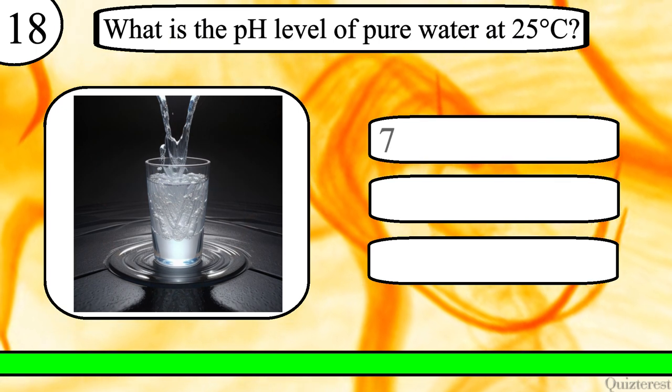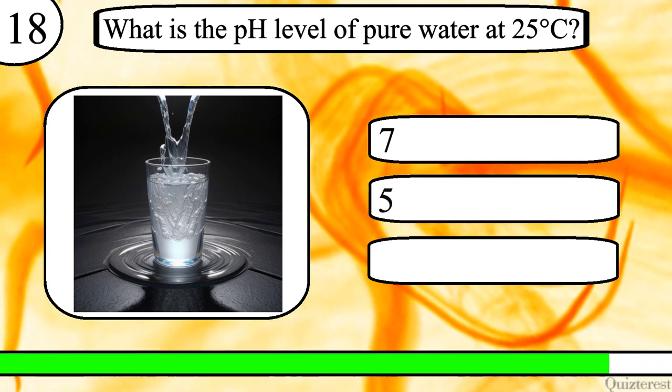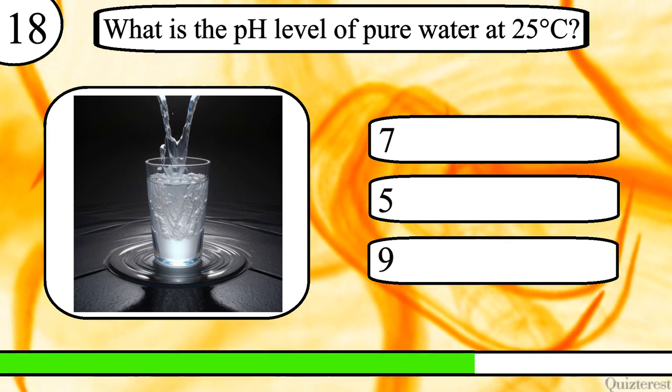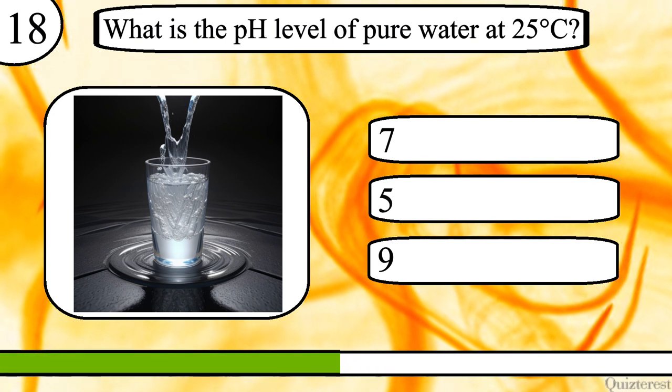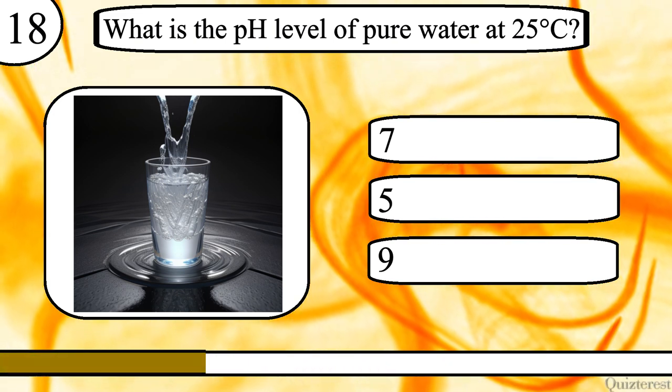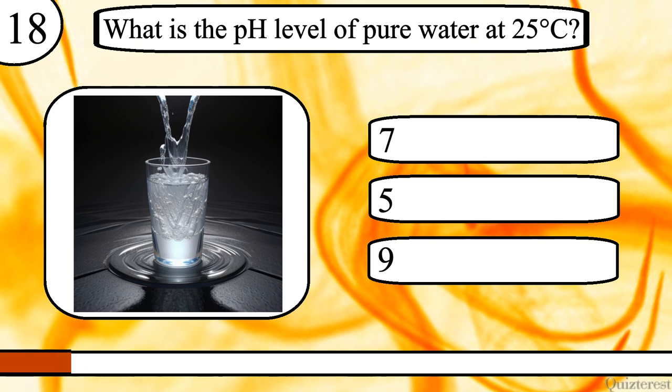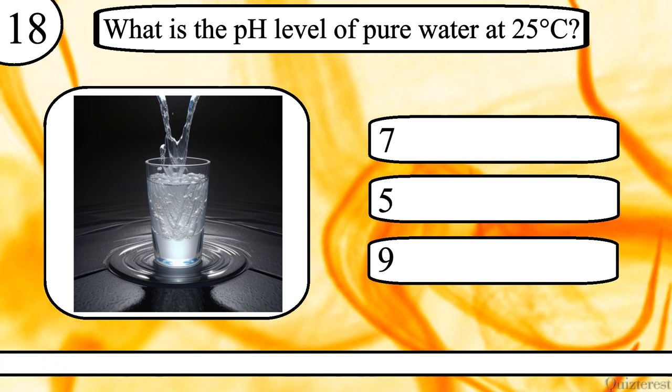What is the pH level of pure water at 25 degrees Celsius? 7, 5, or 9? The correct answer is 7.